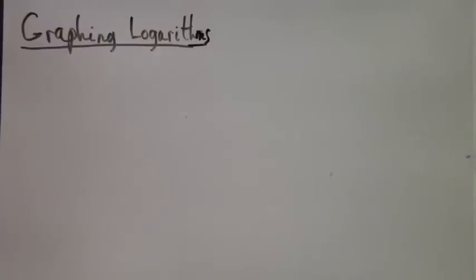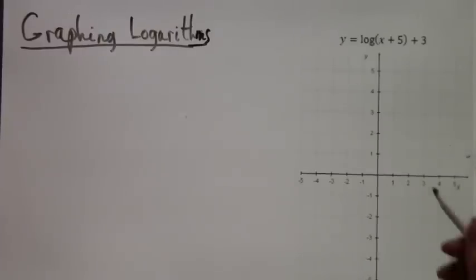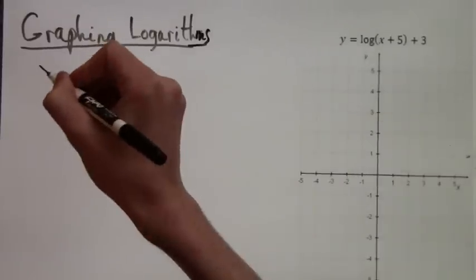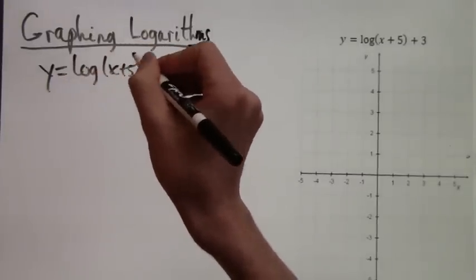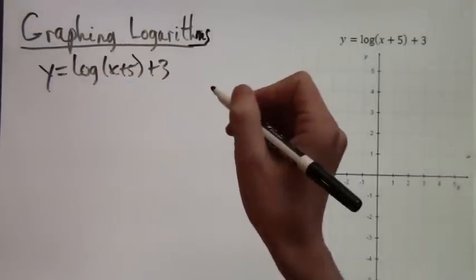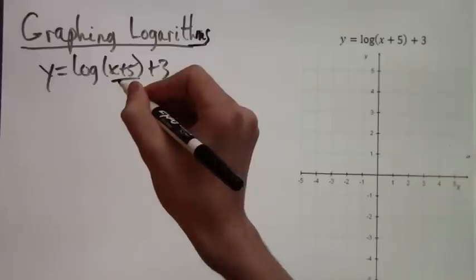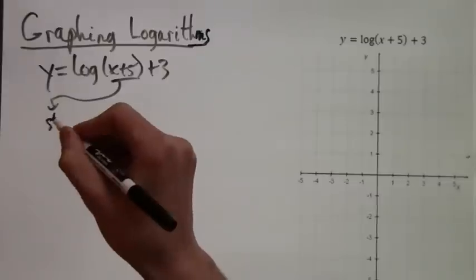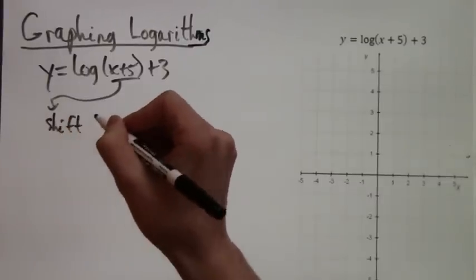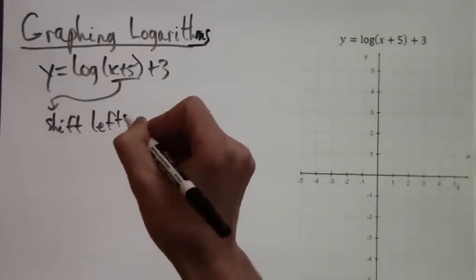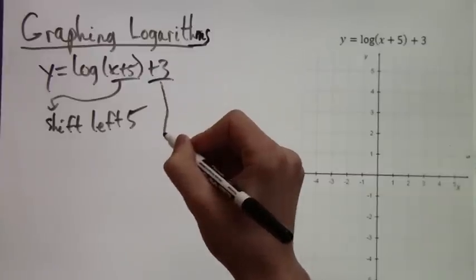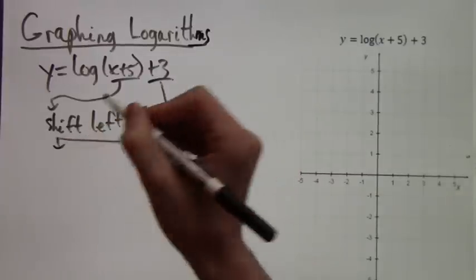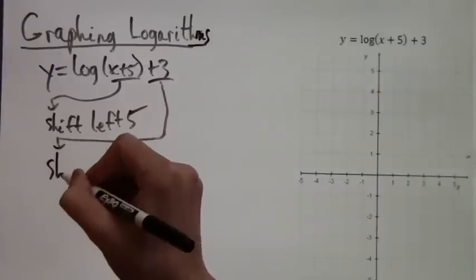Let's do now log of (x plus 5) plus 3. If we have x plus 5 in parentheses and plus 3, we have two shifts. The first shift is five units to the left because of the 5 that we're adding to the x in the parentheses. Next there's the plus 3—this one just moves the whole graph three units up.